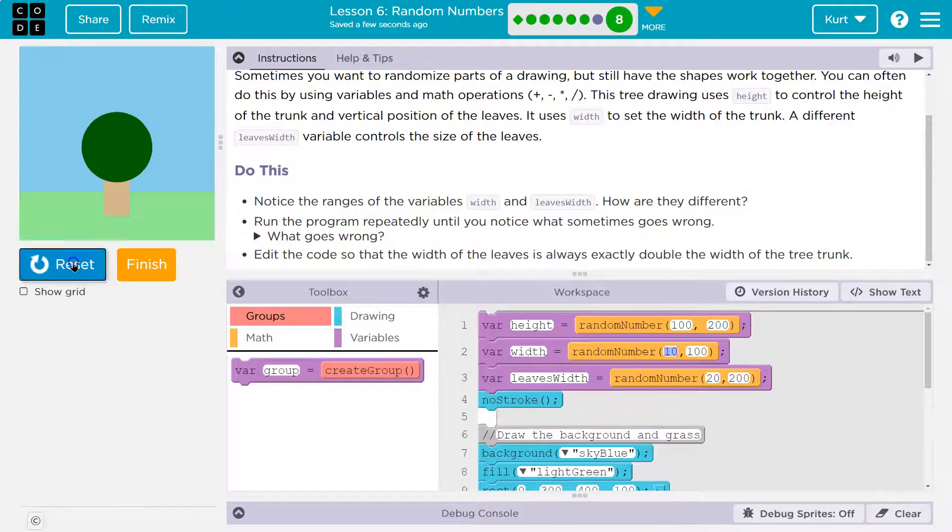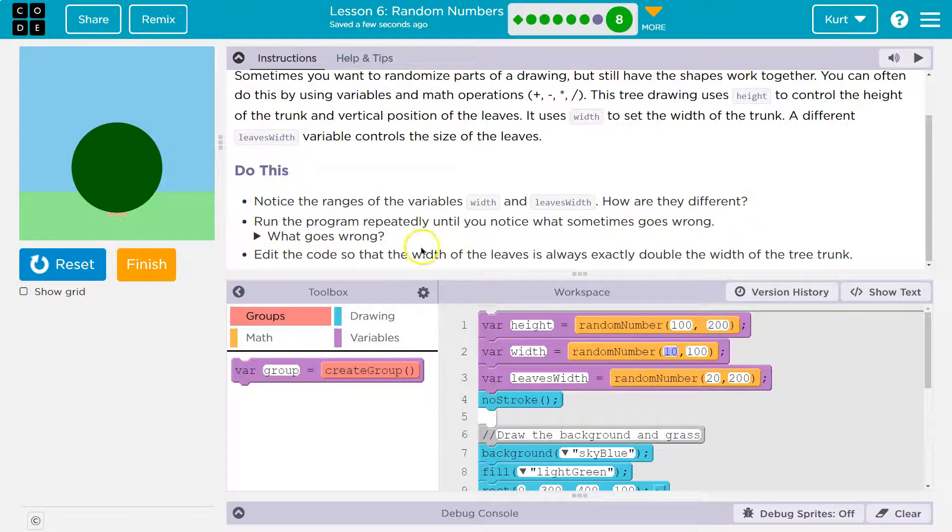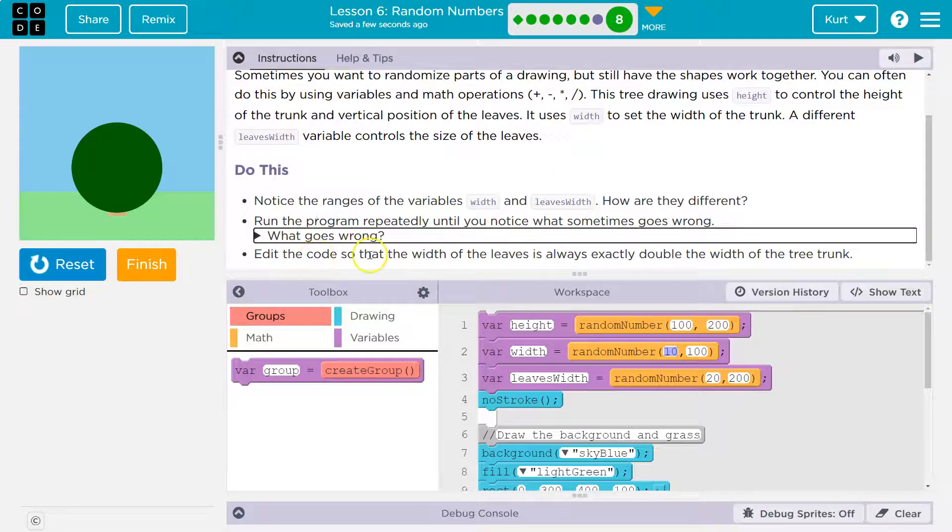Oh, well sometimes that's not... Yeah, it's way too small, way too large. Oh, does it say? Yep, too small, got it. Edit the code. Oh, edit the code so that the width of the leaves is always exactly double the width of the trunk. Ah, that's genius. So then it will never be too small.